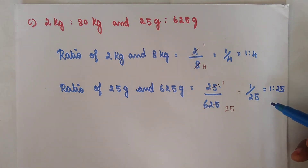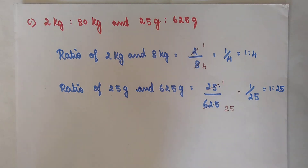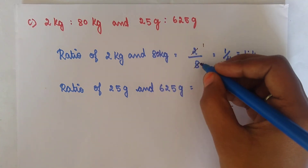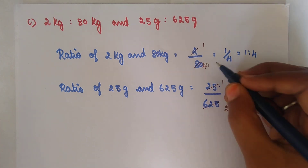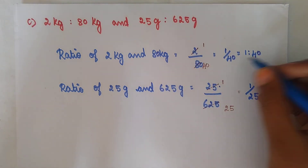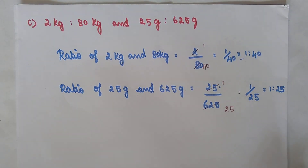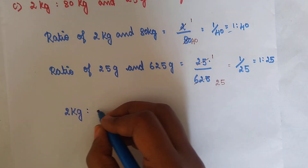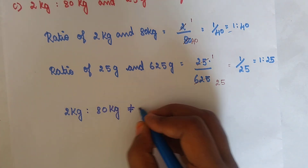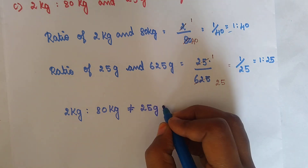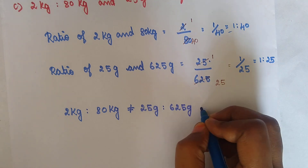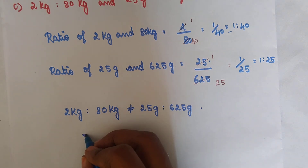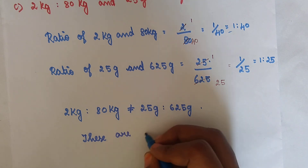Now we compare these two ratios. Here, 1 is to 40 is not equal to 1 is to 25. The ratio of 2 kg to 80 kg is not equal to the ratio of 25 gram to 625 gram. The ratios are not equal, so these four numbers are not in proportion.